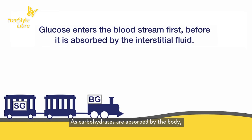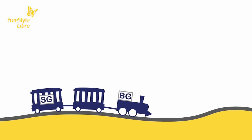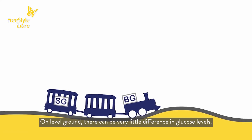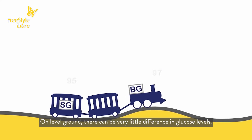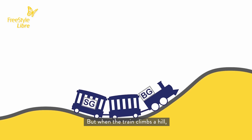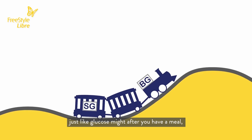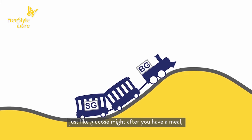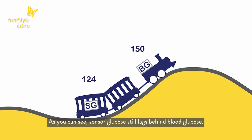As carbohydrates are absorbed by the body, they enter the bloodstream first. On level ground, there can be very little difference in glucose levels. But when the train climbs a hill, just like glucose might after you have a meal, there's a bigger difference in those numbers. As you can see, sensor glucose still lags behind blood glucose.